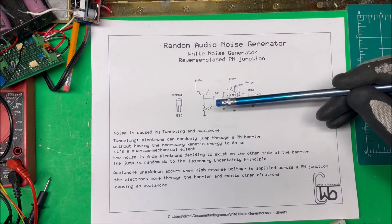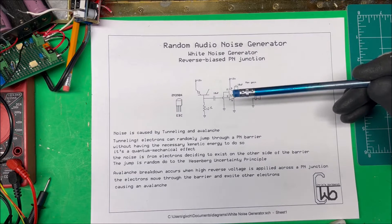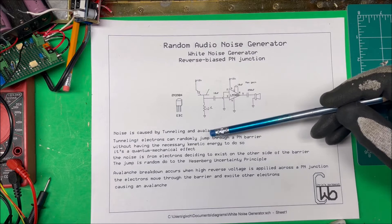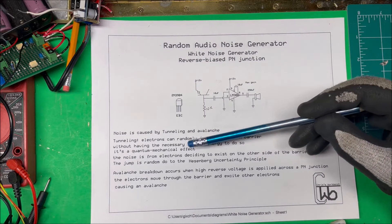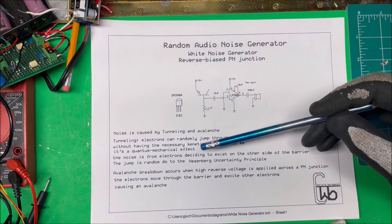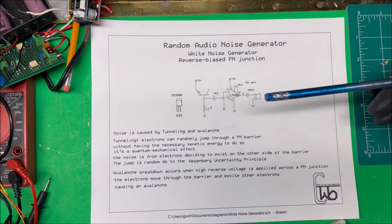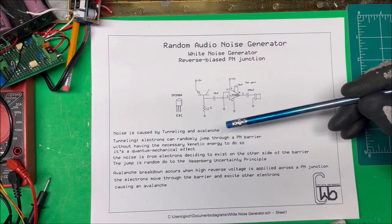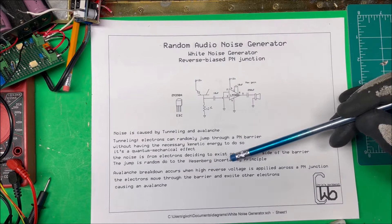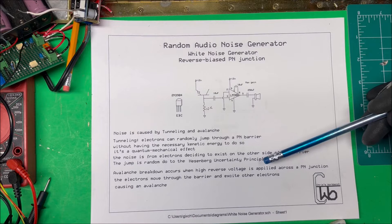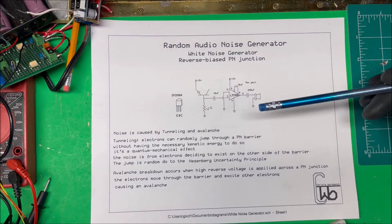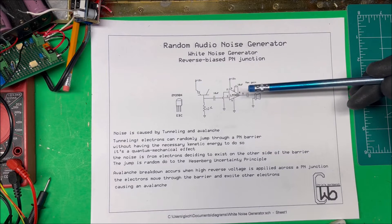The noise is caused by a couple of effects: tunneling and avalanche. Tunneling — electrons can randomly jump through a PN barrier without having the necessary kinetic energy to do so. It's a quantum mechanical effect; the noise comes from electrons deciding to exist on the other side of the barrier, and the jump is random due to the Heisenberg principle. Avalanche breakdown occurs when a high voltage is applied across the PN junction and electrons move through the barrier, exciting other electrons and creating an avalanche.